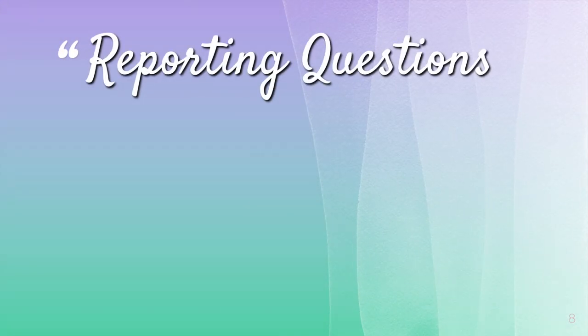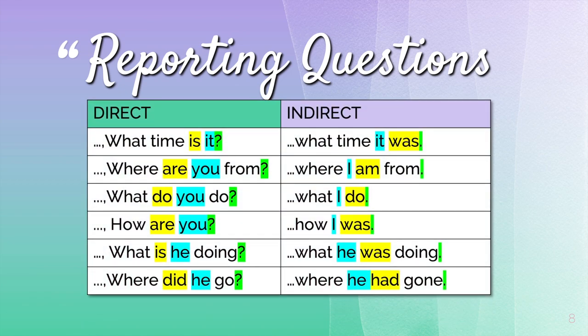Now, how do we report questions? There are three things to consider: first, the verb or tense of the sentence; then the pronoun; and then the punctuation. These are highlighted in three different colors — yellow for tense, blue for pronoun, and green for punctuation. For a sentence such as 'What time is it?', the indirect sentence would be 'what time it was.' Notice the order: pronoun first, then the verb. And instead of a question mark, we use a period.